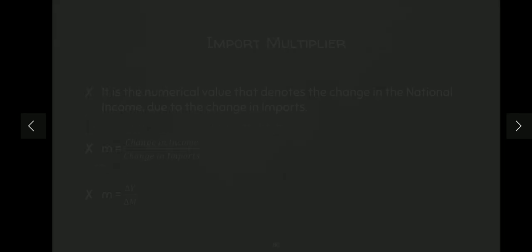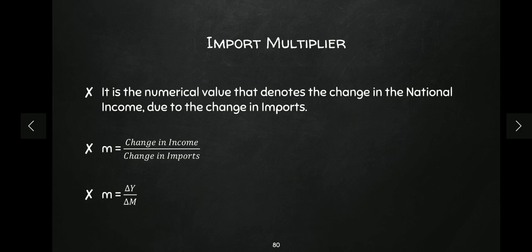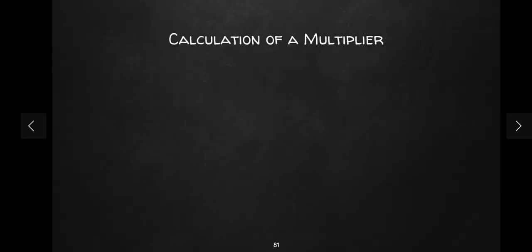Now let's understand the value of the import multiplier. The import multiplier is similar: just as for the export multiplier we ask what is the change in national income if exports change, for the import multiplier we ask what is the change in national income if imports change. The formula is change in national income divided by change in imports — that is, delta Y upon delta M.